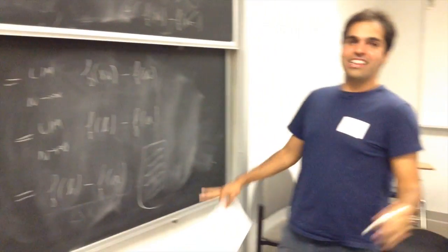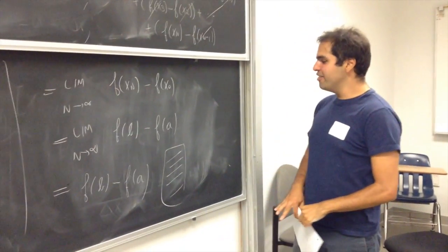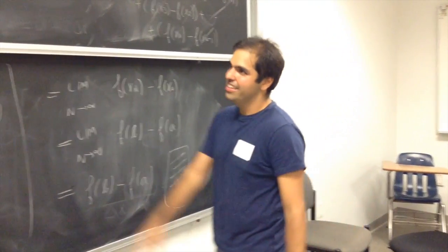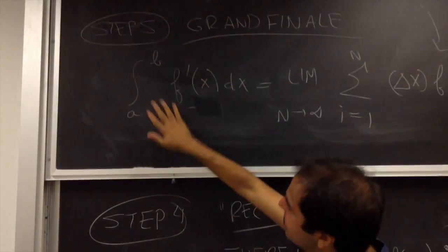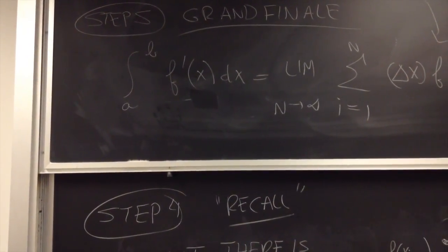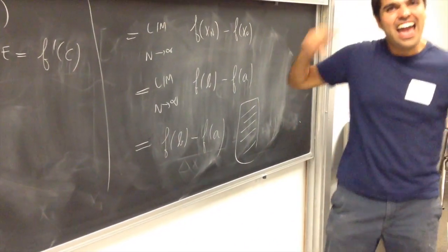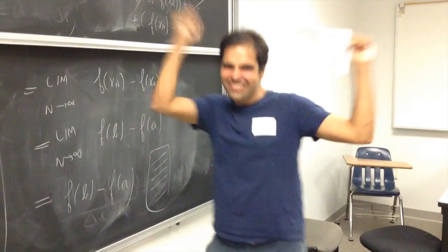And here we are fundamentally proved the second part of the fundamental theorem of calculus. Because if you go back in this line, we've shown that integral from a to b of f prime of x dx equals to f of b minus f of a. And we did not use any epsilons and deltas. Woo!